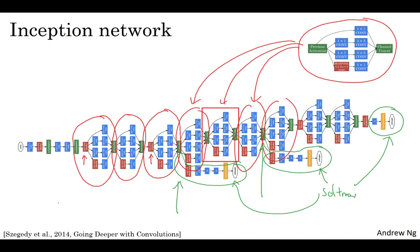And by the way, this particular inception network was developed by authors at Google, who called it GoogLeNet, spelled like that, to pay homage to the LeNet network that you learned about in an earlier video as well. So I think it's actually really nice that the deep learning community is so collaborative, and that there's such strong healthy respect for each other's work in the deep learning community.